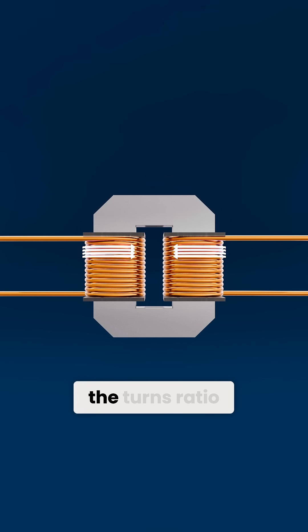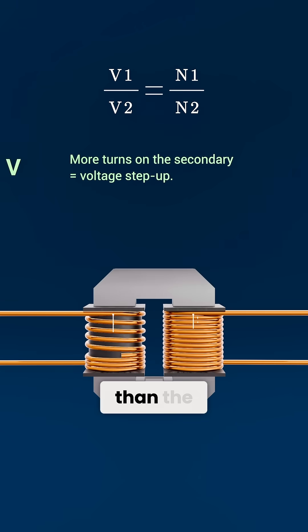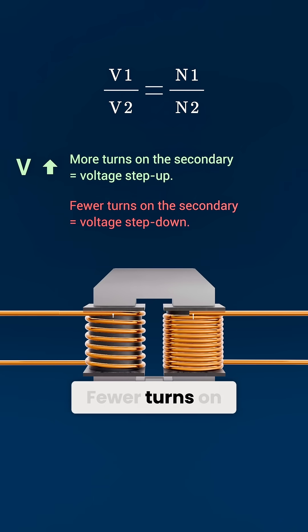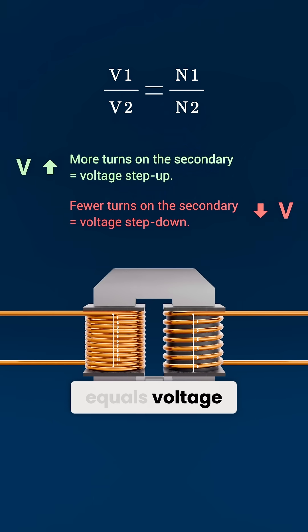The magic lies in the turns ratio. More turns on the secondary than the primary equals voltage step up. Fewer turns on the secondary equals voltage step down.